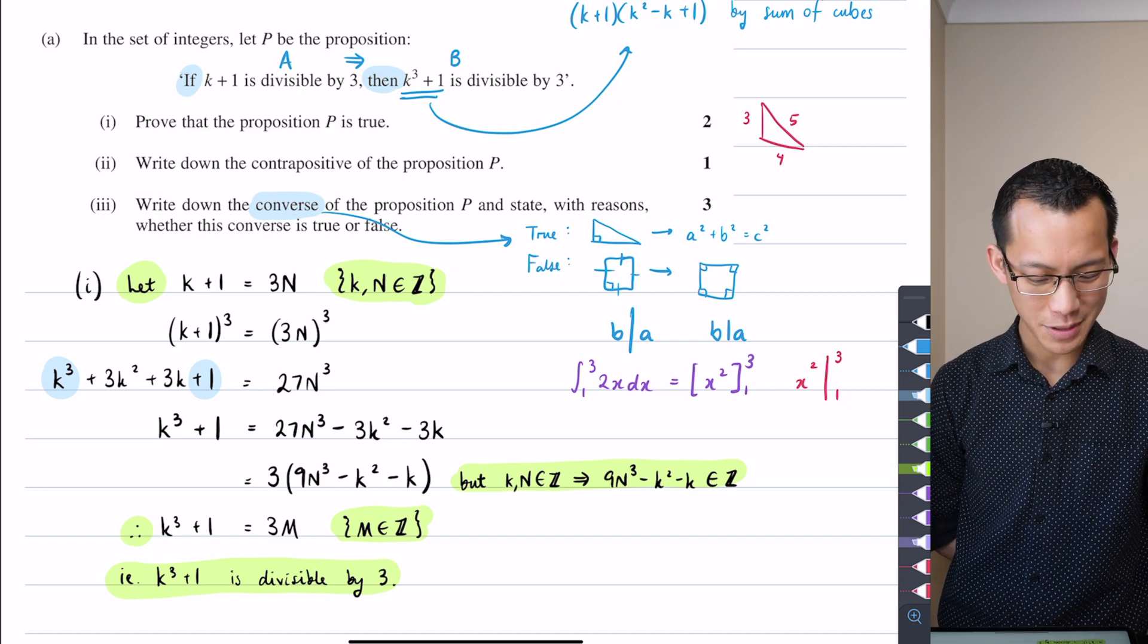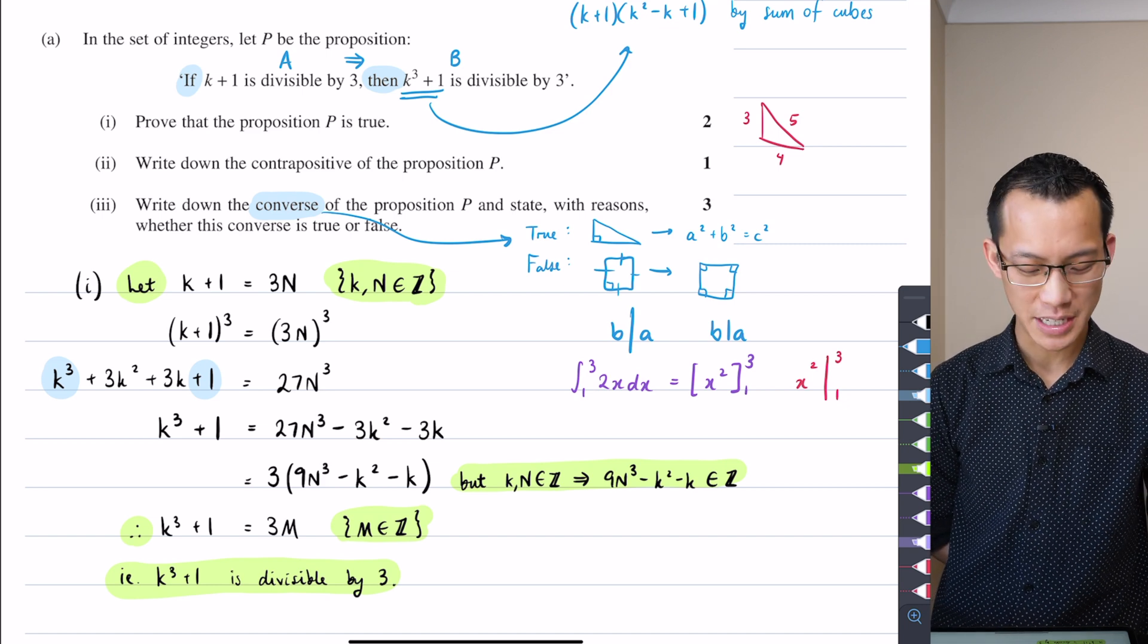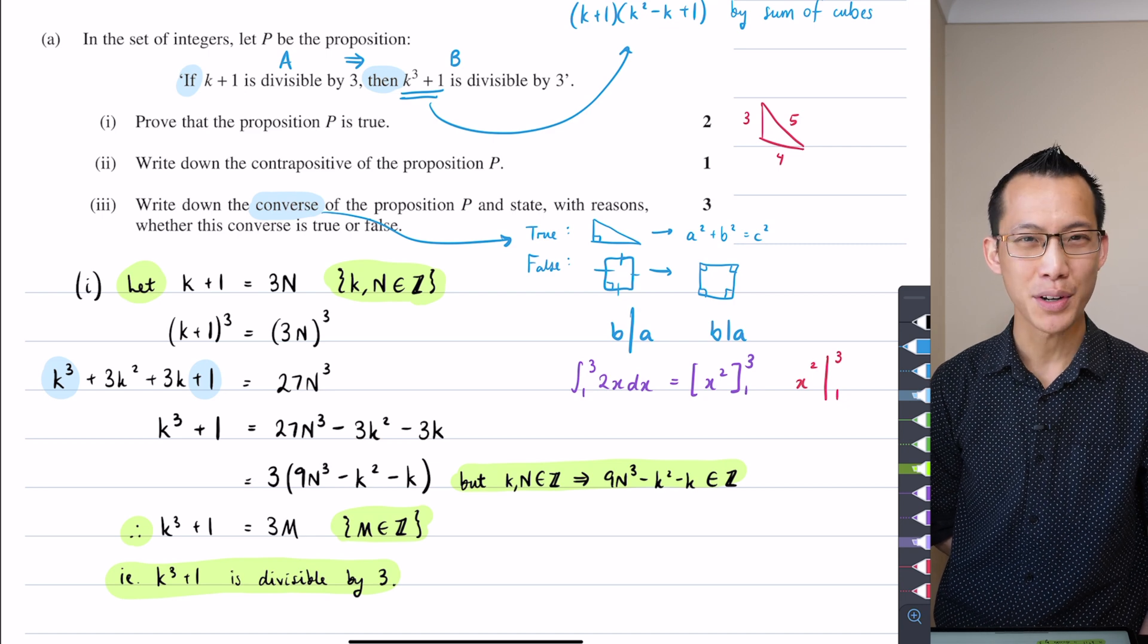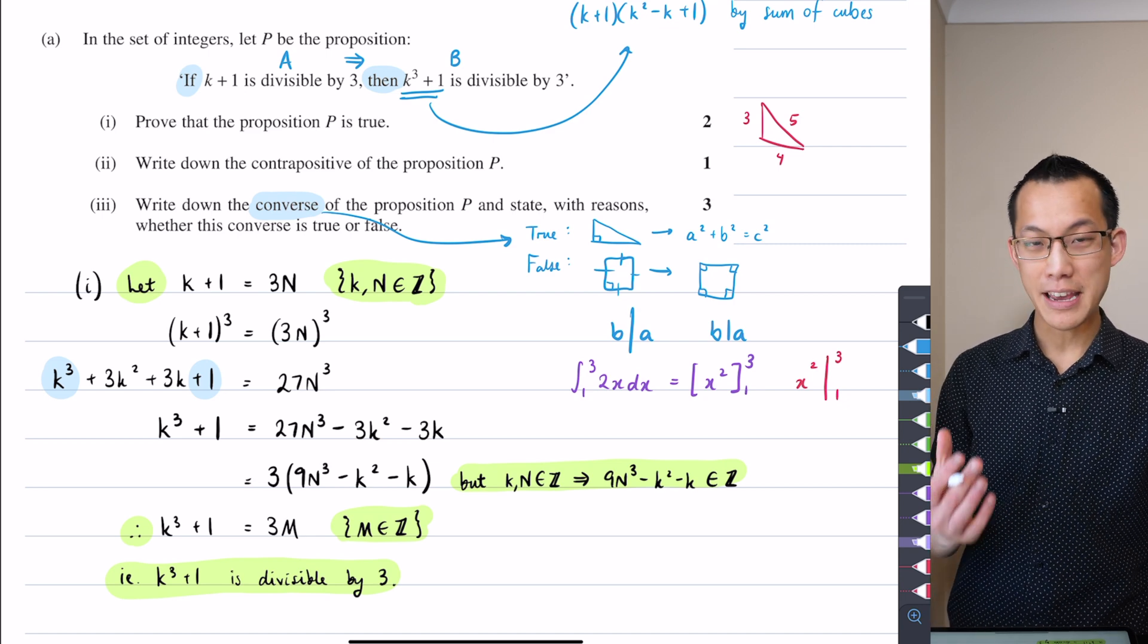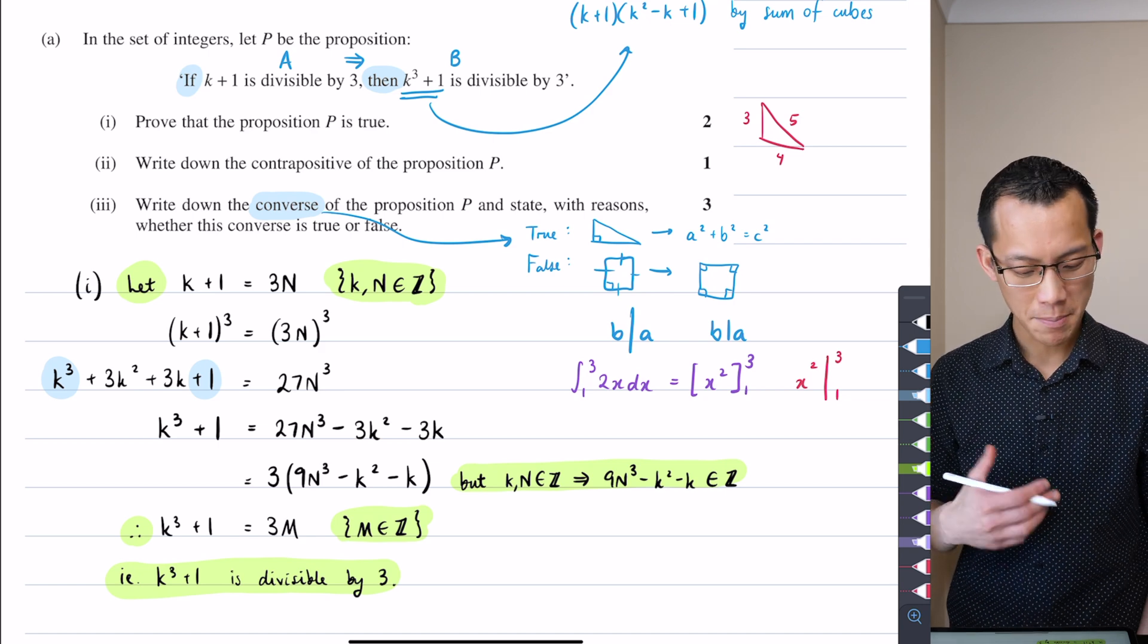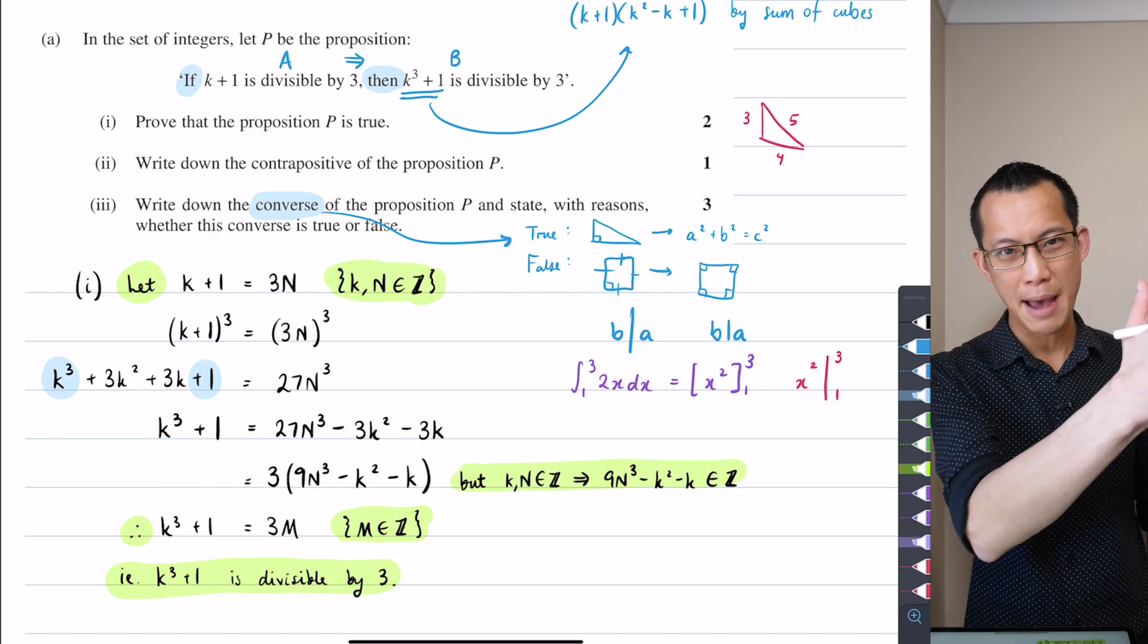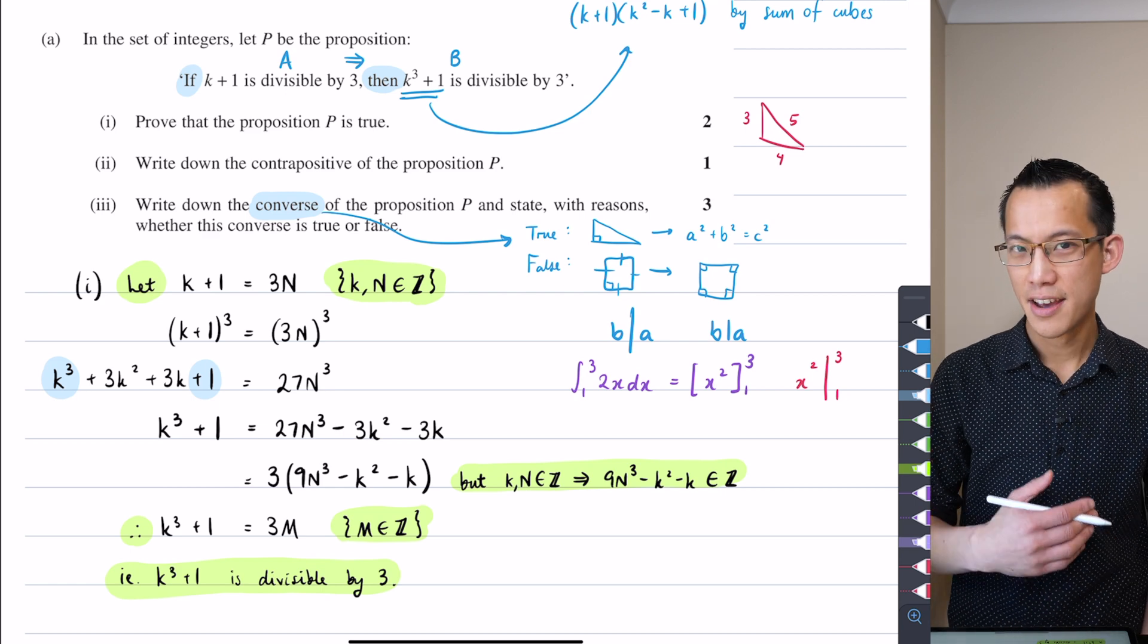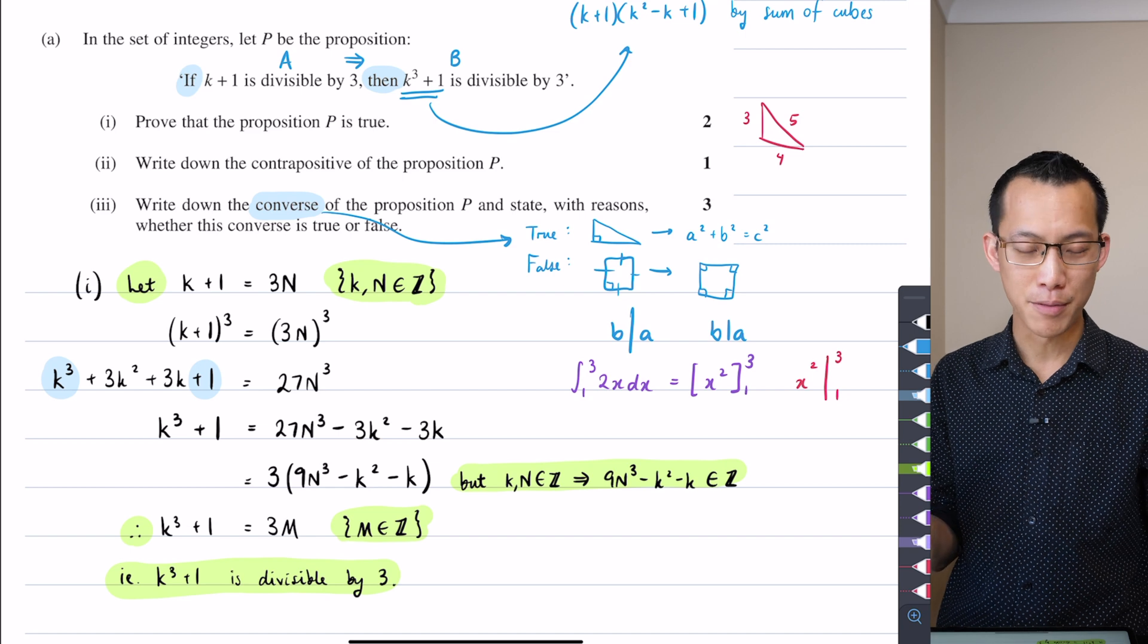Why would they ask us to tell us what a contrapositive is? And then it just sort of disappears off into the night, right?